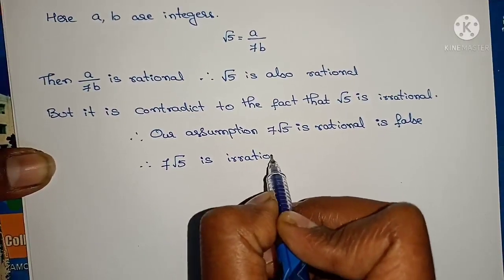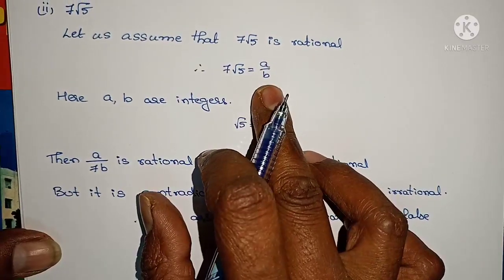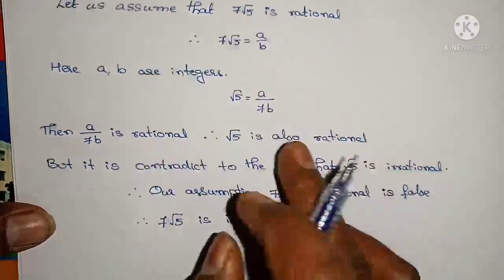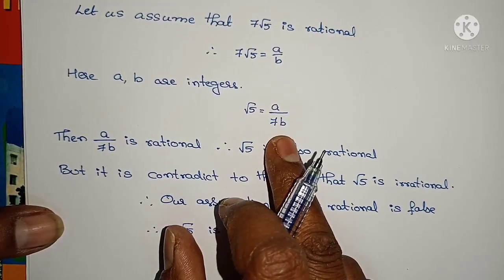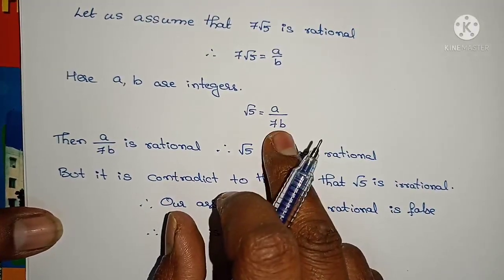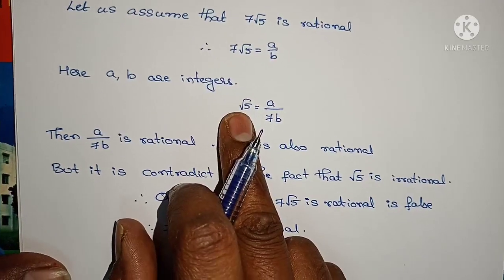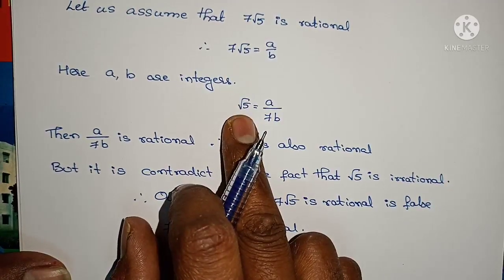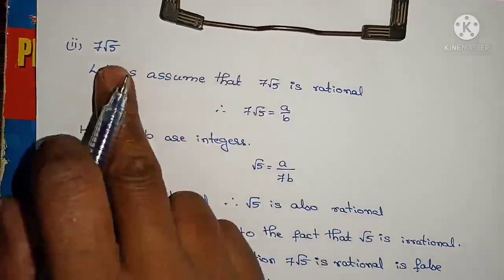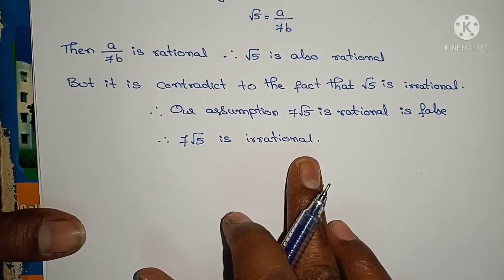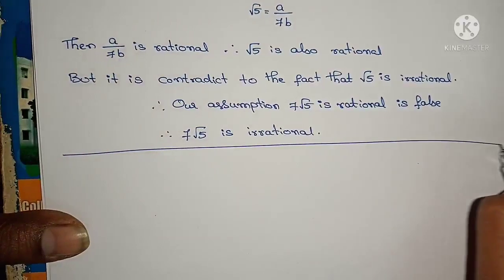Therefore 7√5 is irrational. We assumed it as rational, wrote it in the form a by b, so a by 7b is rational, which would mean root 5 is rational. But root 5 is irrational, so our assumption is false, and 7√5 is irrational.